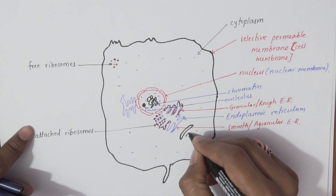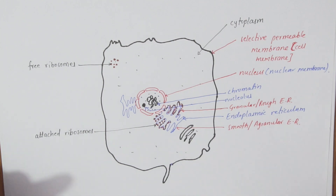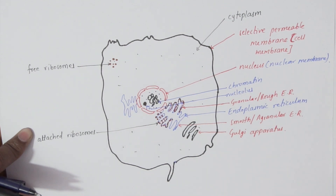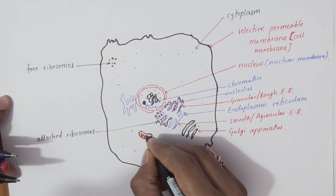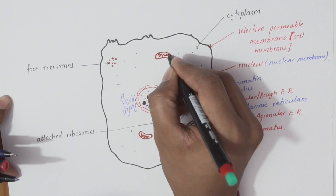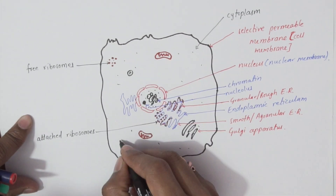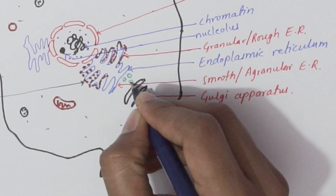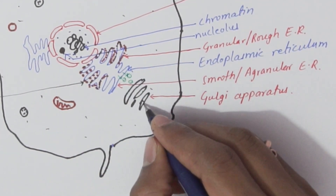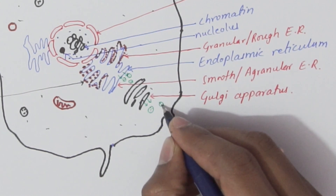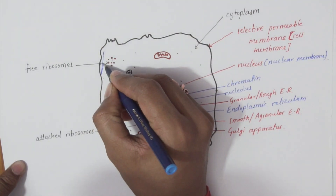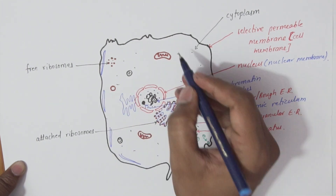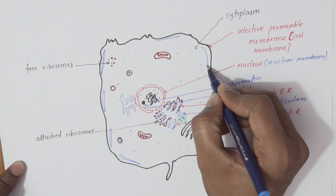There is another tubular structure similar to the endoplasmic reticulum called the Golgi apparatus or Golgi complex. Apart from that, the cell also has mitochondria, lysosomes, peroxisomes, transport vesicles which come out from the endoplasmic reticulum, and secretory vesicles which come out from the Golgi apparatus.